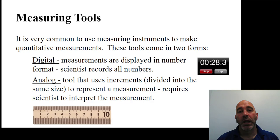In order to make quantitative measurements, sometimes we use measuring tools. It is very common to use a measuring instrument tool to make quantitative measurements. These tools come in two different forms. The first one is digital, and that is a measurement displayed as a number format. The scientist just records all the numbers. And your cell phone timer is a great example of a digital measuring tool.